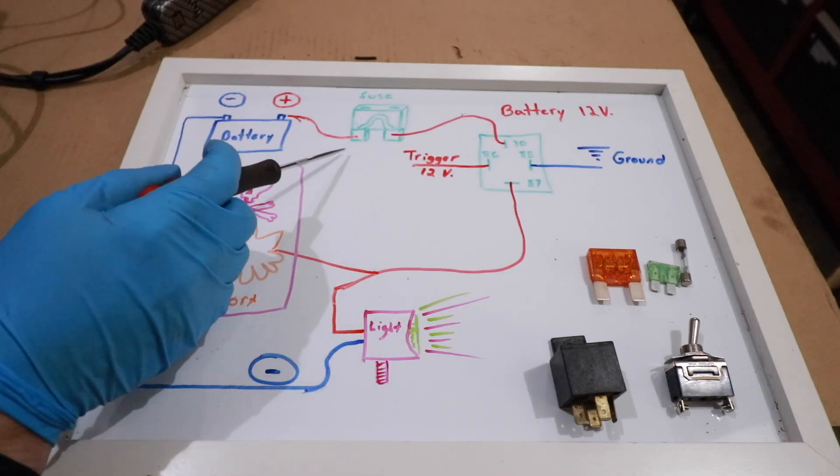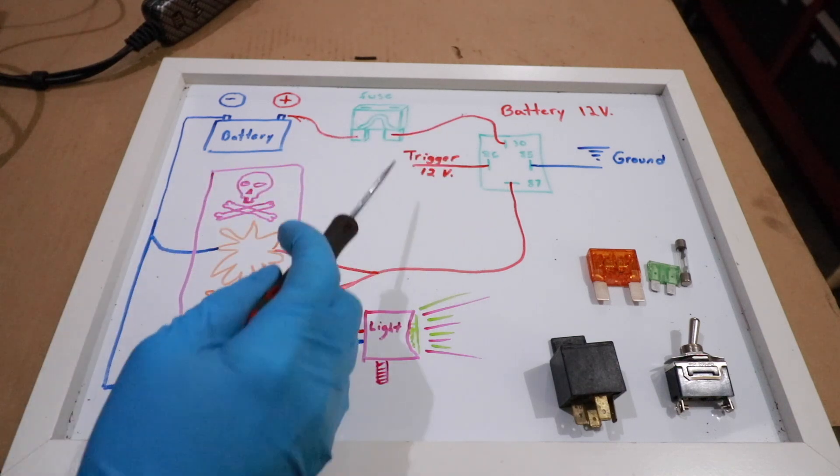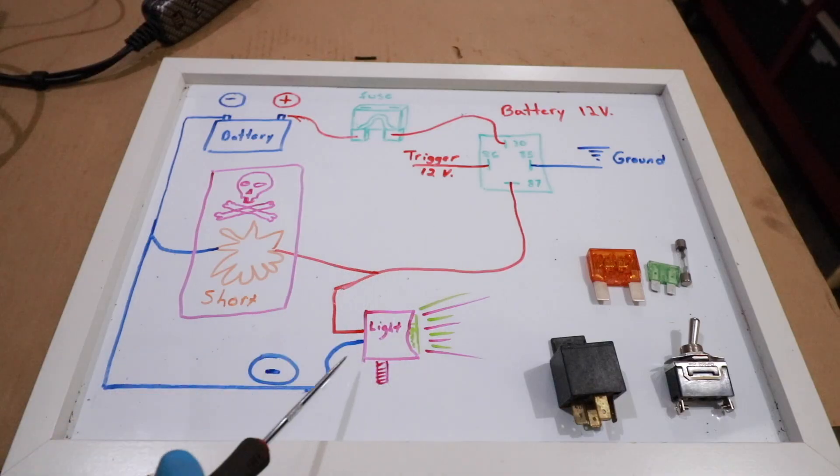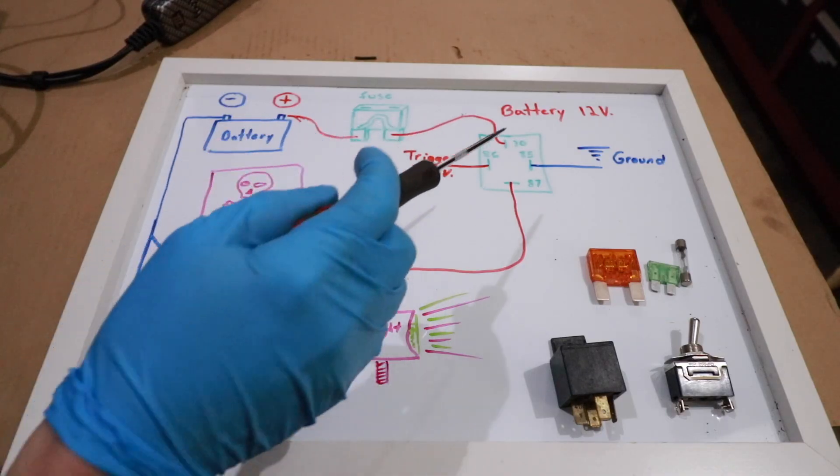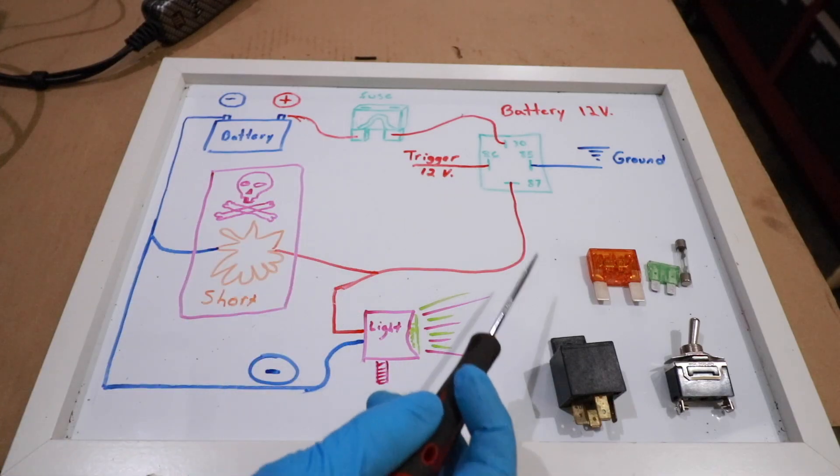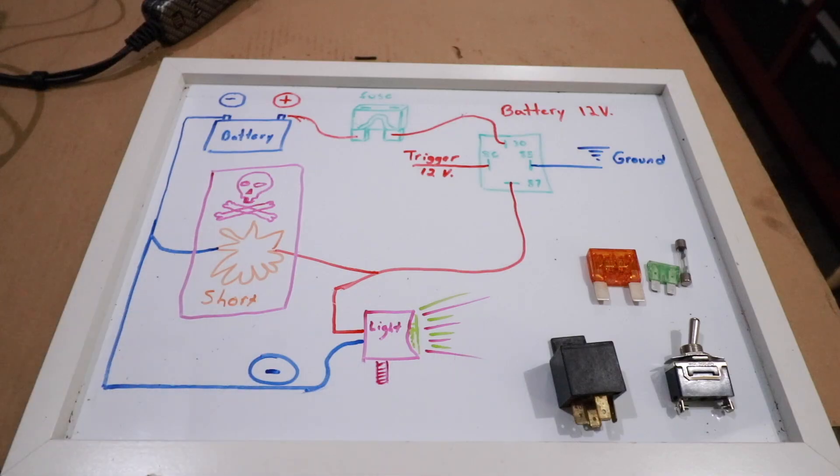The fuse is really important because it protects components downstream on the circuit. If we have a short circuit somewhere downstream, this fuse in theory should blow, thus protecting our wiring and our other components down line such as relays, light fixtures, switches, whatever we need to power down the line.